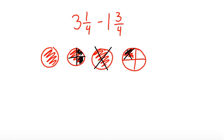And if I count what's left, I have 1 whole and 2/4. So, 3 and 1/4 minus 1 and 3/4 equals 1 and 2/4.